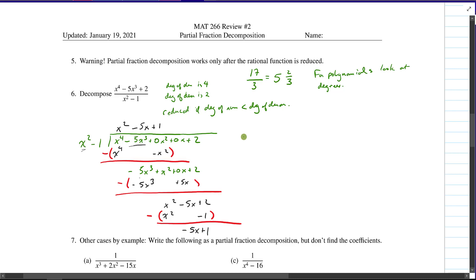So that means that the original fraction can be written as x to the fourth minus 5. Well, here, let me recopy the original fraction. And we can rewrite this as x squared minus 5x plus 1, where I got all of those terms from the long division, plus the remainder, which is minus 5x plus 1, over the divisor, which was our x squared minus 1.